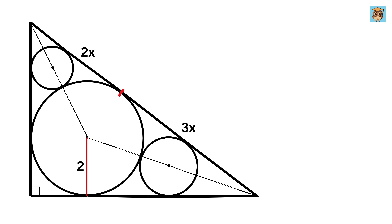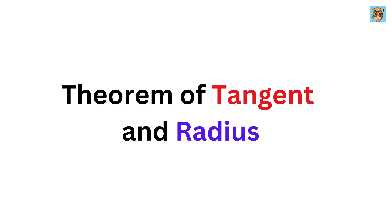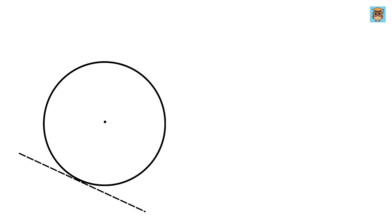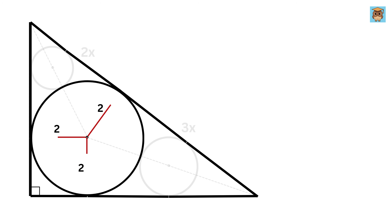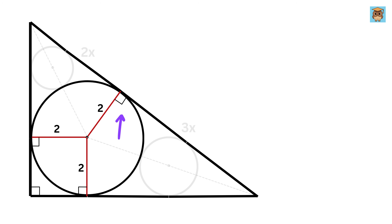As a first step, let us learn about the theorem of tangent and radius. A tangent is a straight line that touches the circle at exactly one point without crossing it. The important property of a tangent is that it is always perpendicular to the radius at the point where it touches the circle. So if we draw these three radii, they will be perpendicular to the horizontal side, the vertical side, and the hypotenuse, respectively.